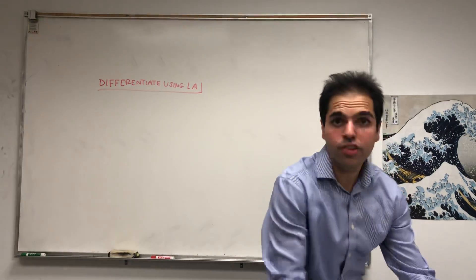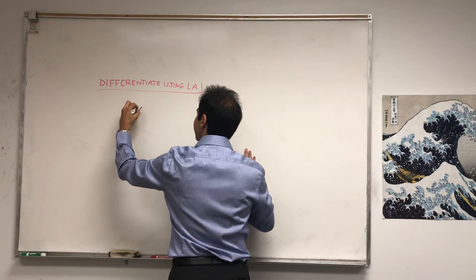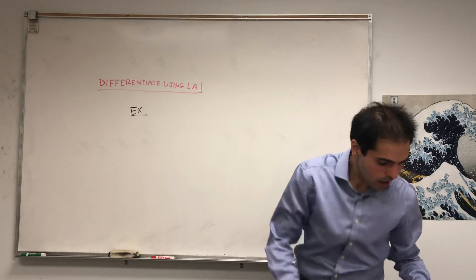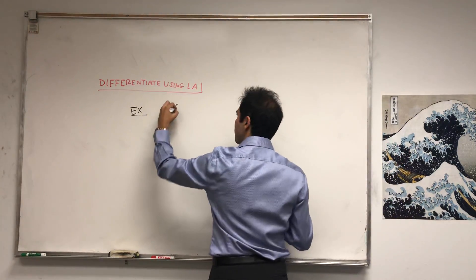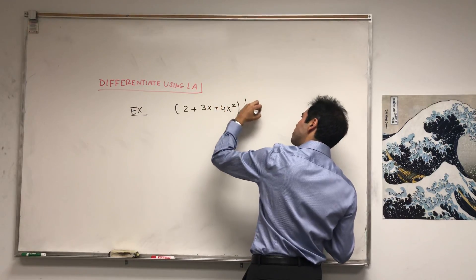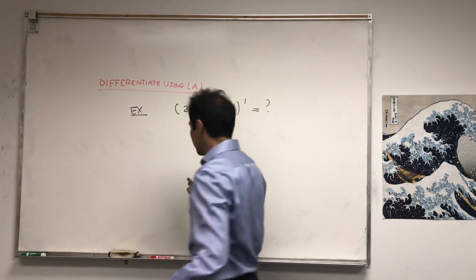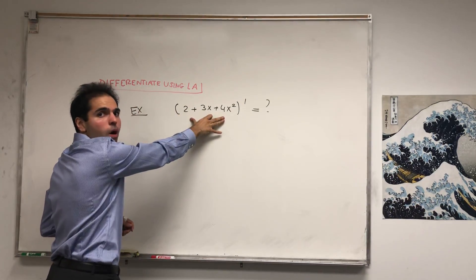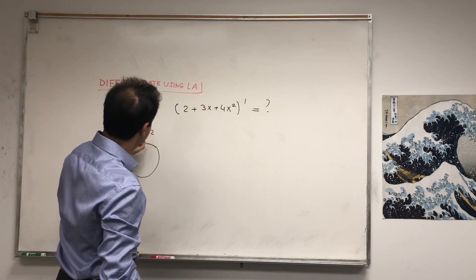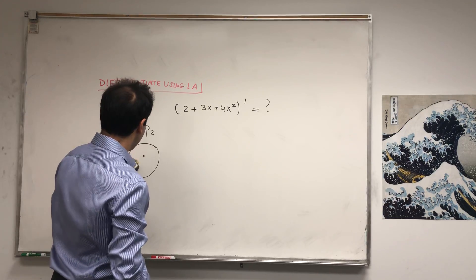So consider the following linear transformation, or here's the example. Let's differentiate the polynomial 2 plus 3x plus 4x squared. And suppose you don't know what differentiation is. Then, first of all, this thing lies in the space of polynomials of degree less than or equal to 2, so in P2. And you have this very abstract vector, 2 plus 3x plus 4x squared.